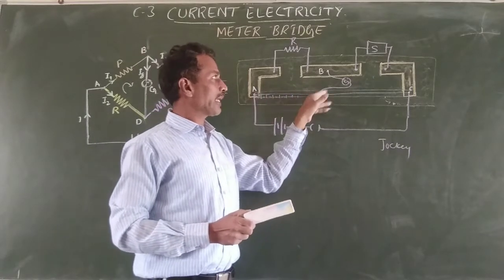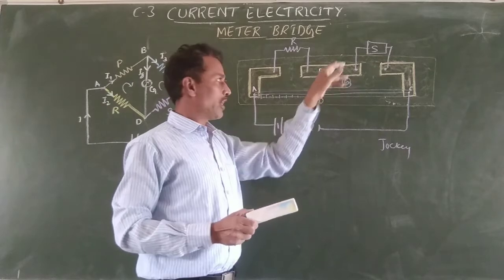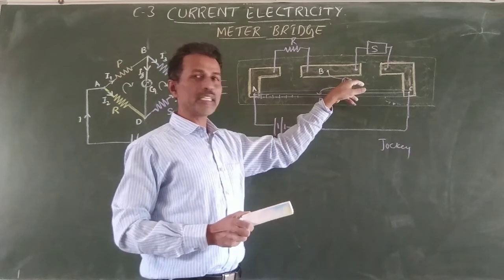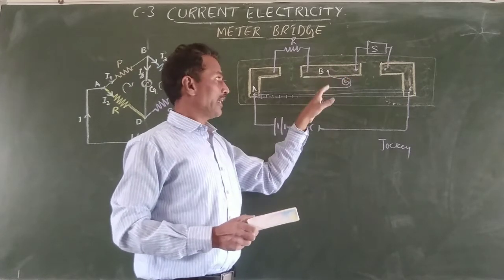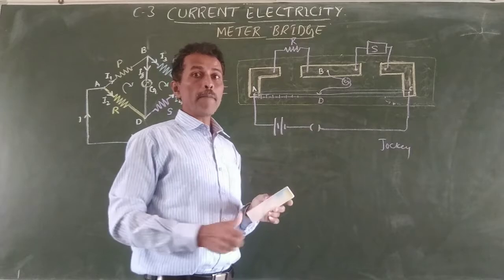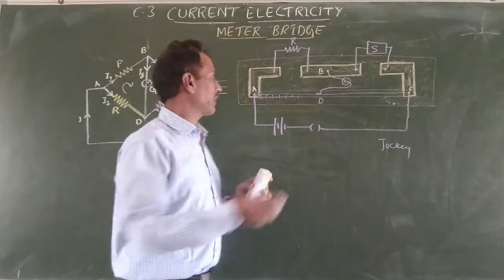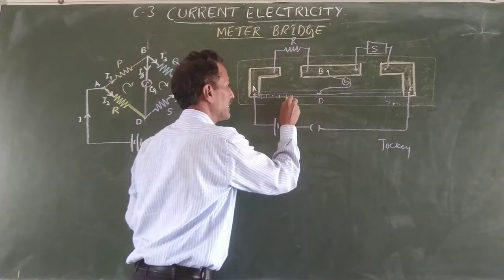Move the bridge wire till the galvanometer shows zero. Let D be the point for which the galvanometer shows zero — then D is called the balancing point. The length AD is called the balancing length.